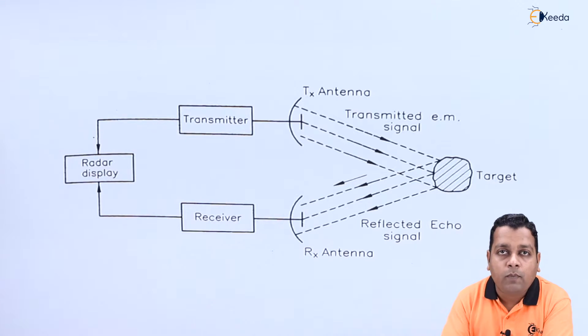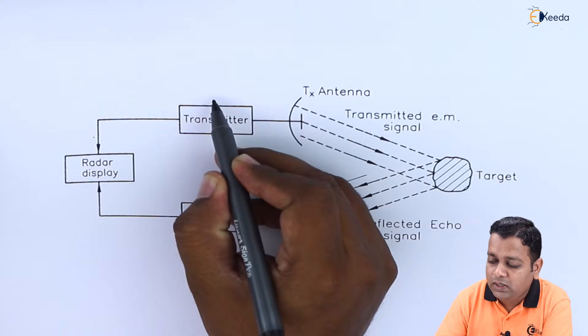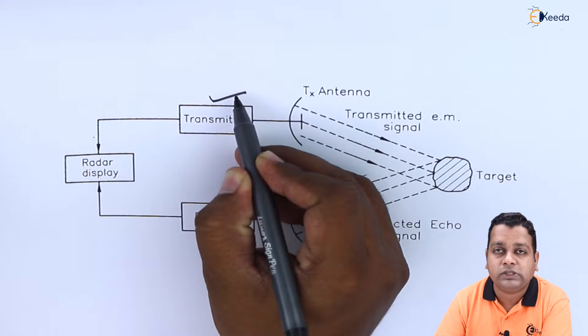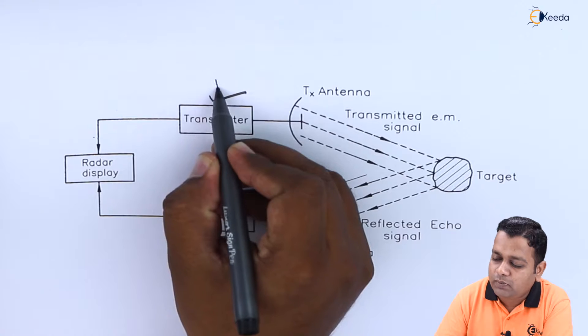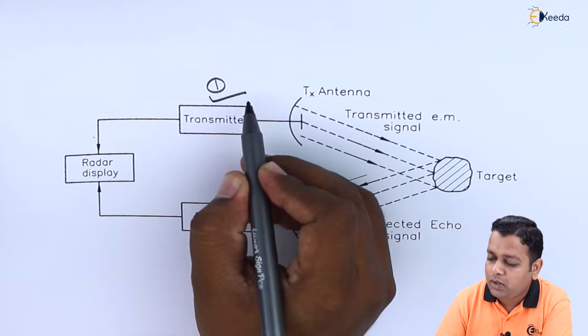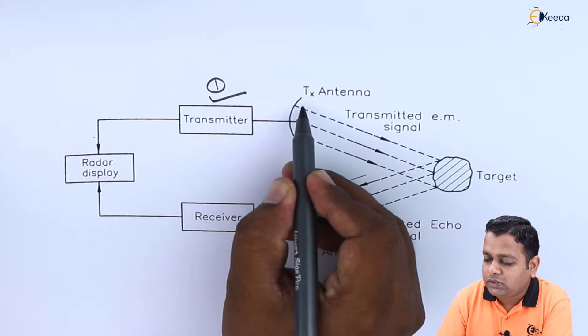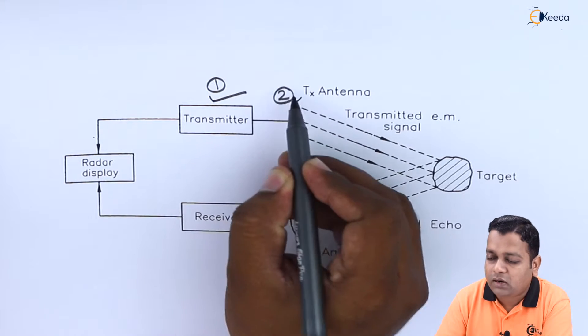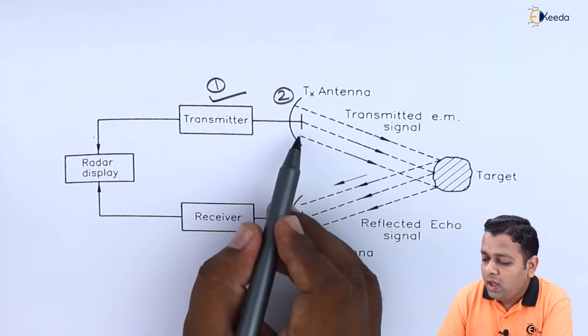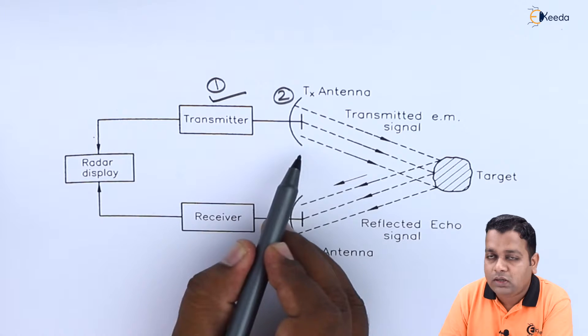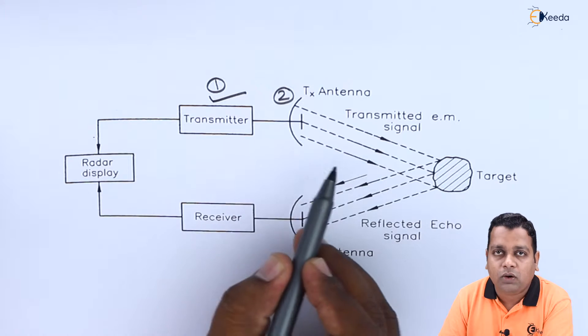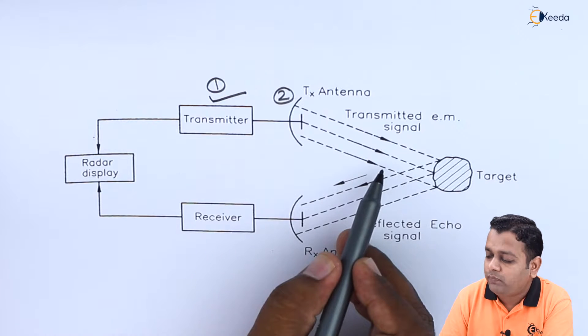Basically the components of the radar system are, first of all, it is very essential to have the transmitter. This is the first very important component with the help of which we can give the transmitting antenna.